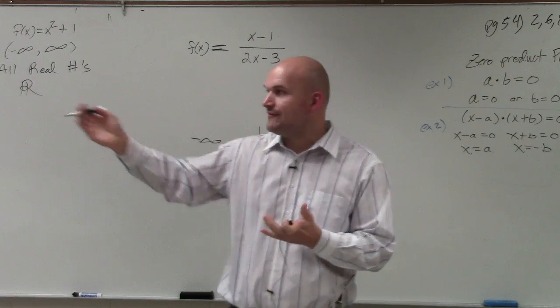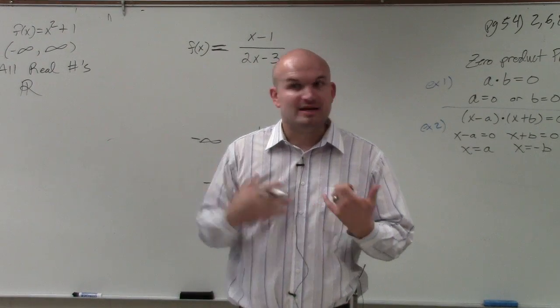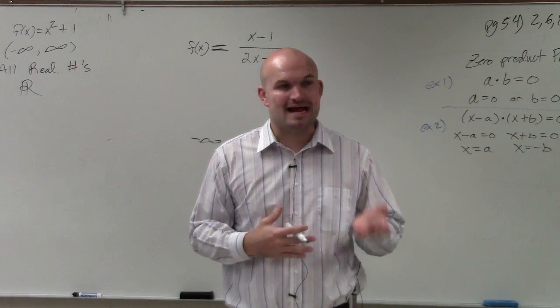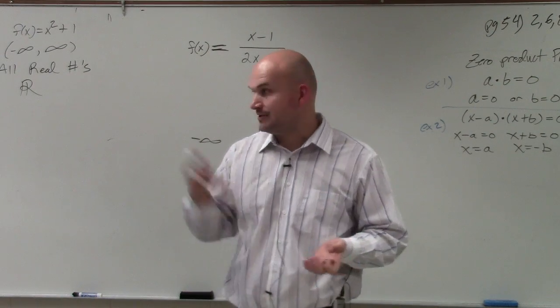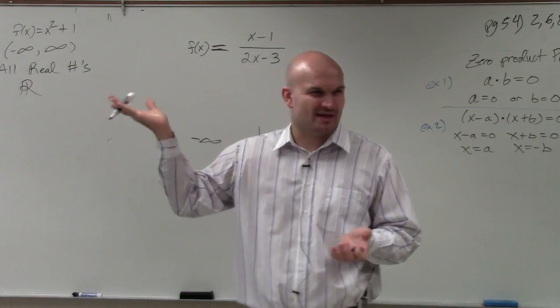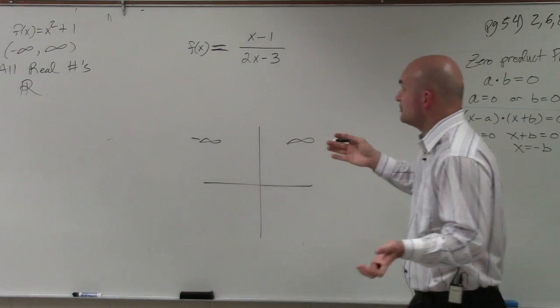However, we have to look at our embedded restrictions. We know that if there's a variable in the denominator, that can't make the denominator equal to 0. So we can't make the denominator equal 0.